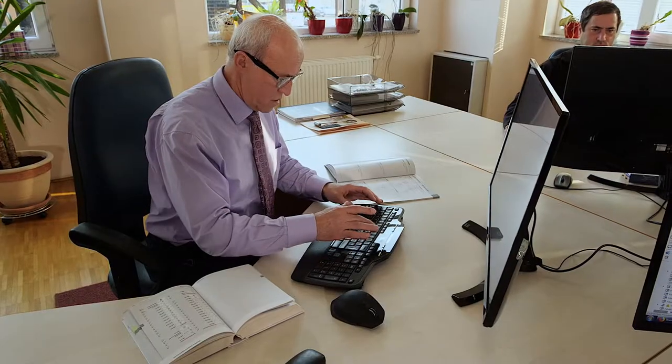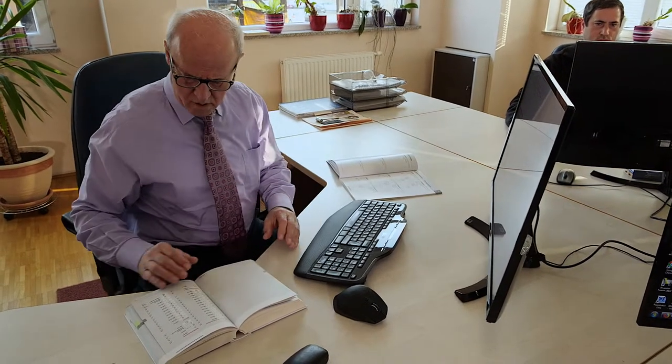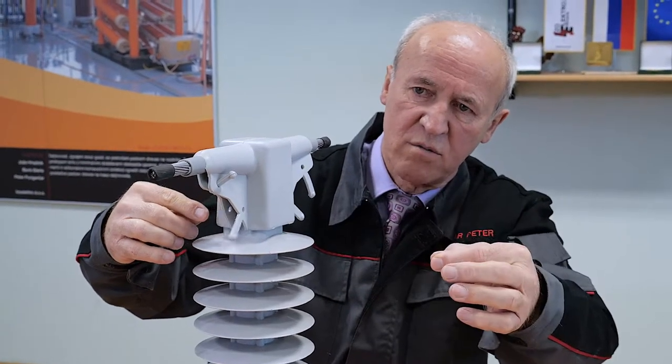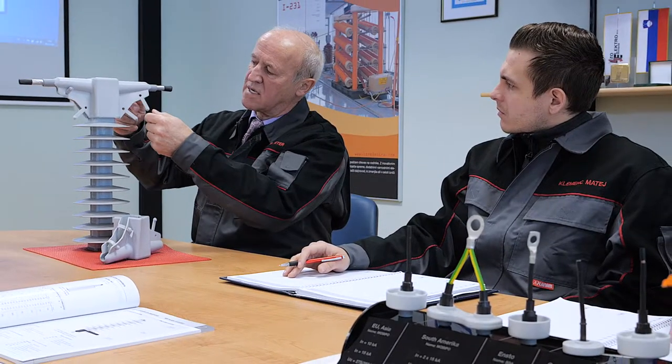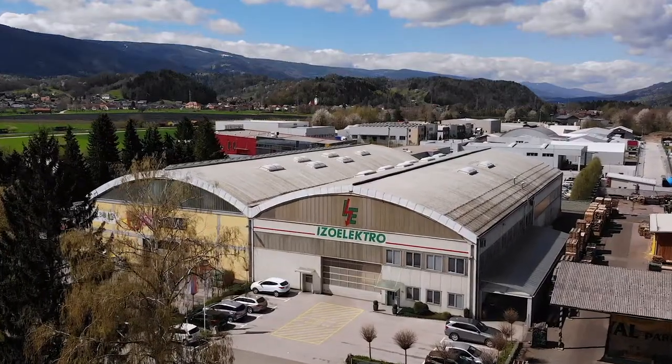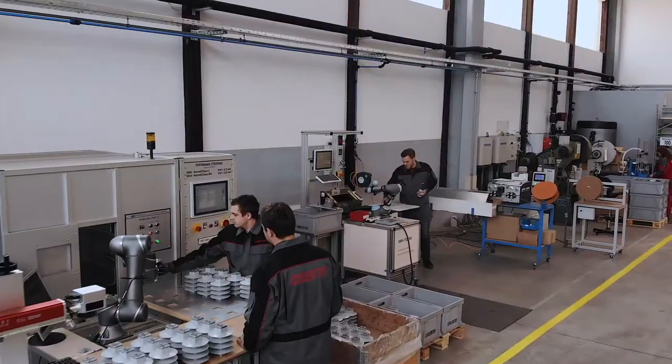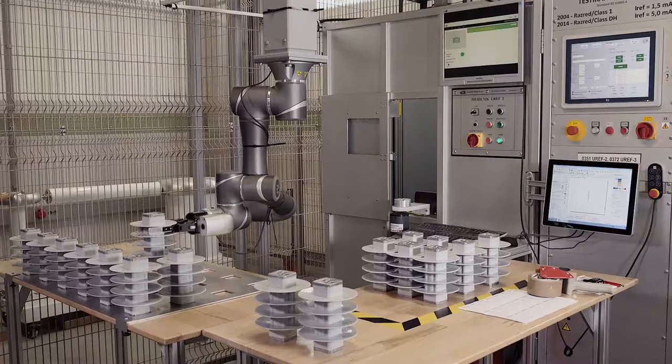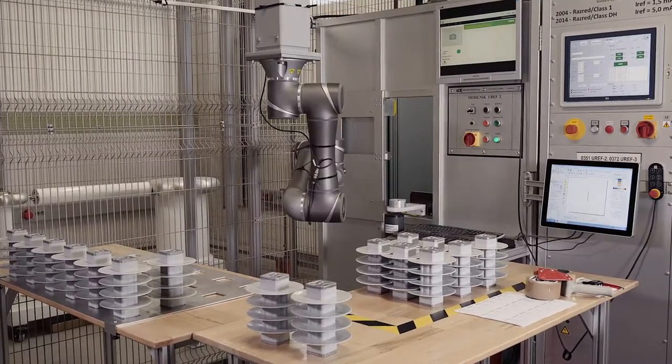Our short-term plan is to produce medium-voltage surge arrestors with a silicone coating and a built-in RAM device that remotely indicates degradation of the built-in surge arrester on the overhead power line. In addition to four robots that run the testing process completely independently, we will also introduce four additional robots in the production process by 2020.